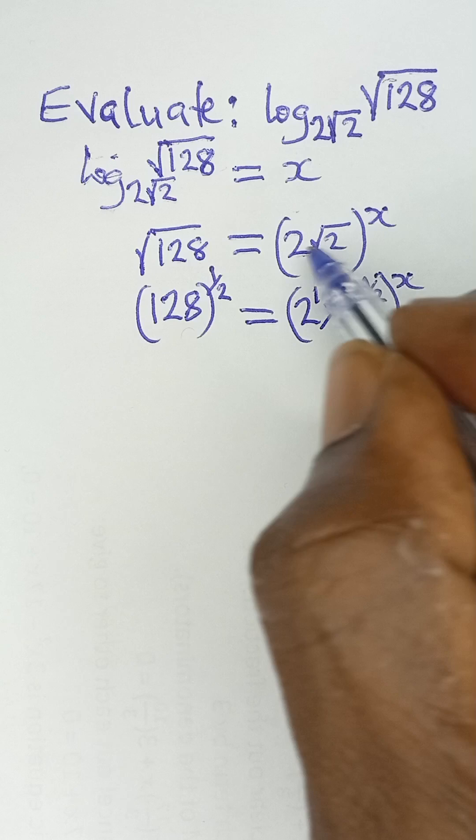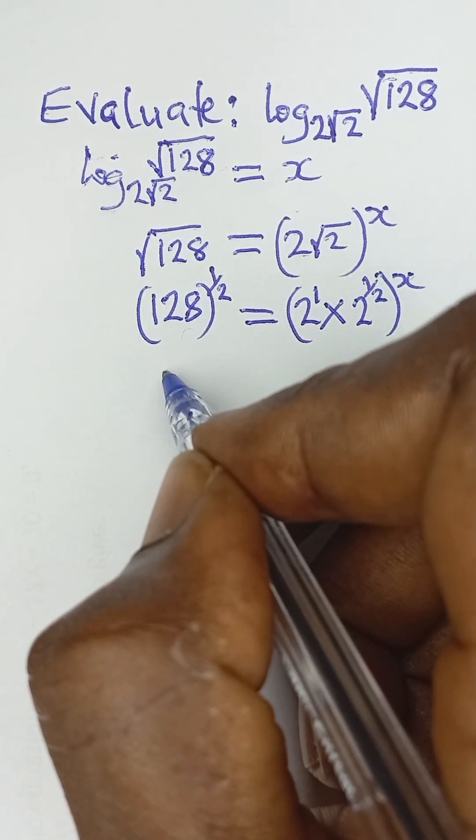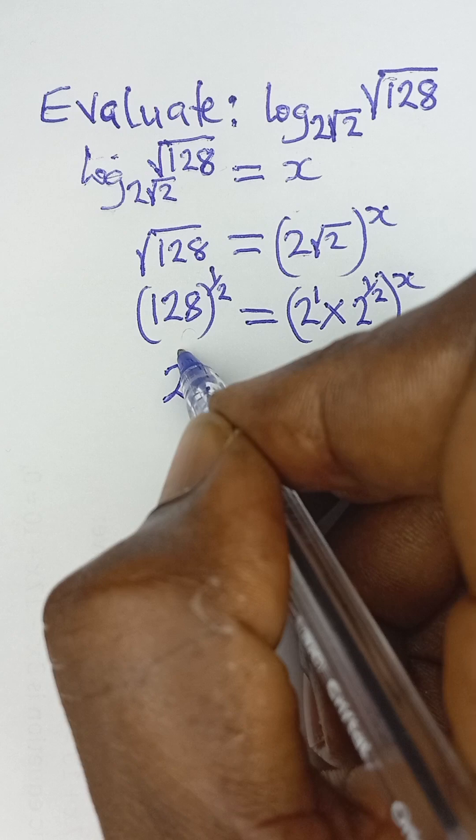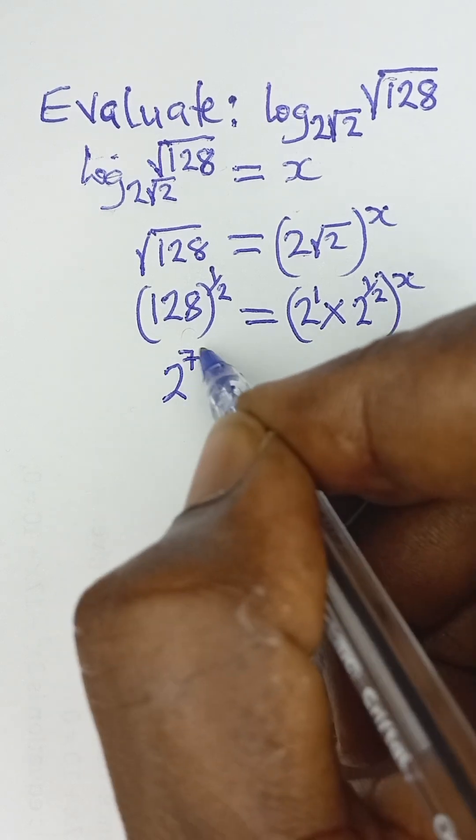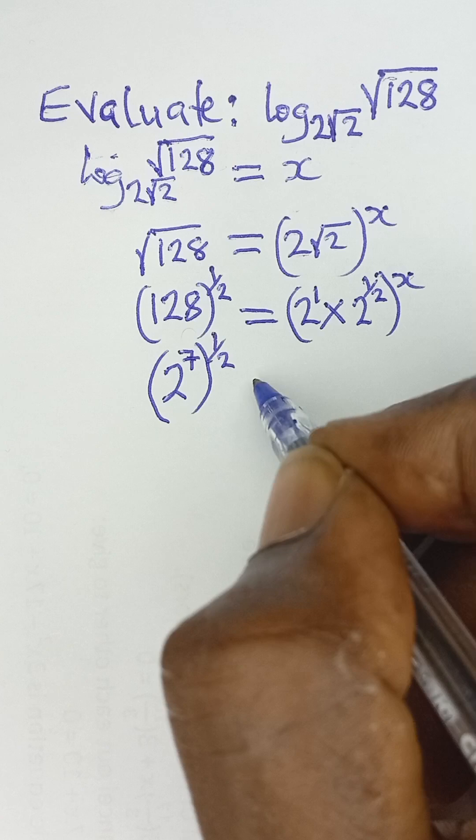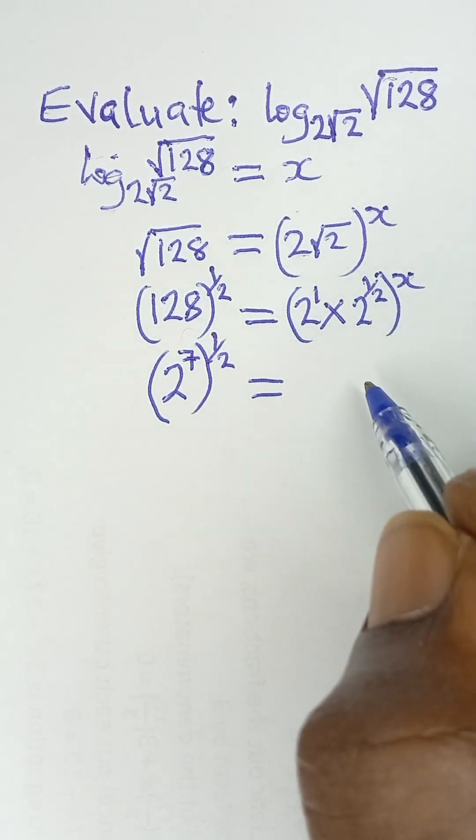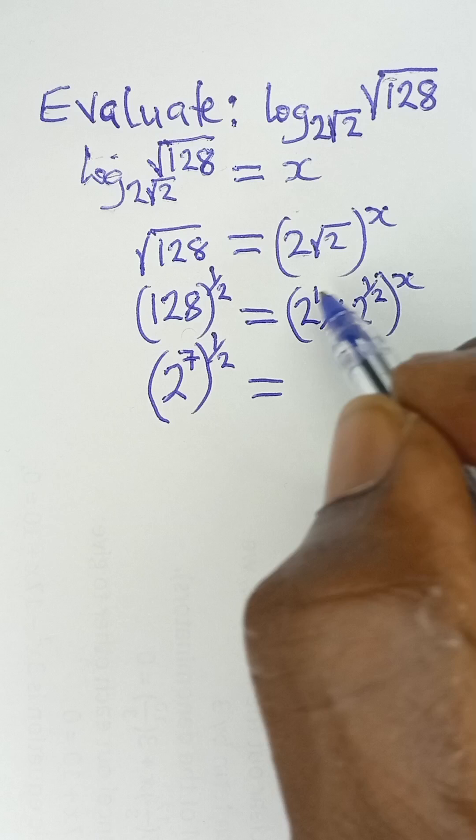This can be expressed as 2 raised to the power of 7, since 128 is 2 raised to power 7, and then all raised to power half. Adding these two powers gives 3 over 2.